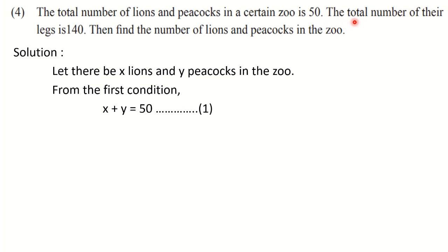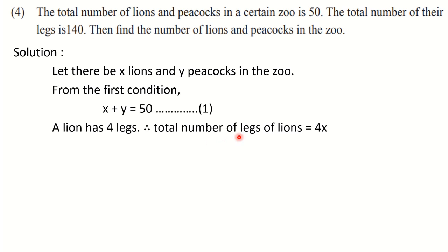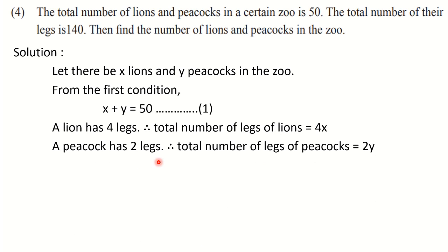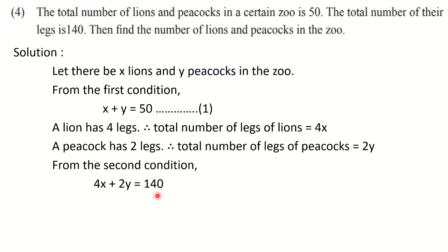For the second condition — total number of legs: lions have 4 legs, so the total legs of lions is 4X. Peacocks have 2 legs, so the total legs of peacocks is 2Y. Their total is 140, so: 4X + 2Y = 140. Don't number it as equation 1 in a hurry — we can simplify it further by dividing both sides by 2, giving the simpler equation 2X + Y = 70. Give this the number 2. Always try to reduce if possible.